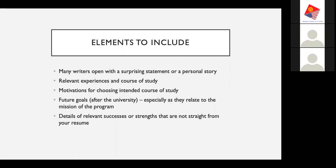For example, my application for my Fulbright grant — I began by talking about a hiking trip that I took in Kyrgyzstan that went really badly. The story wasn't so long, but I was able to share some elements of my personality and also some experience that I'd had in the country already. But I also had to work through many drafts with my mentor to make sure I wasn't sharing too much about that adventure story, because I needed to leave space to talk about my goals and connect it back to my grant. Other elements should include relevant experiences and your course of study. If you're applying for a graduate or undergraduate degree, there is a path that led you to that decision and this is your opportunity to explain why.